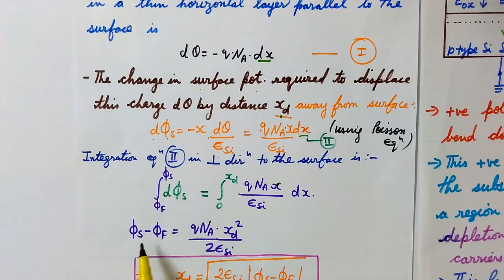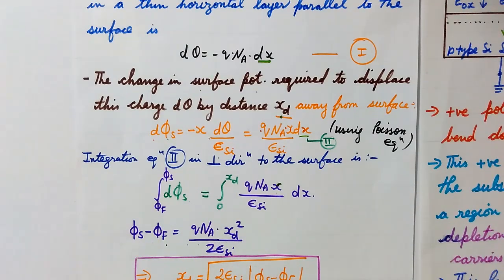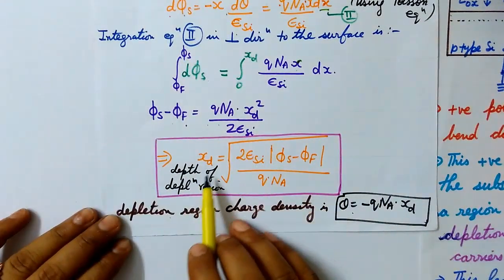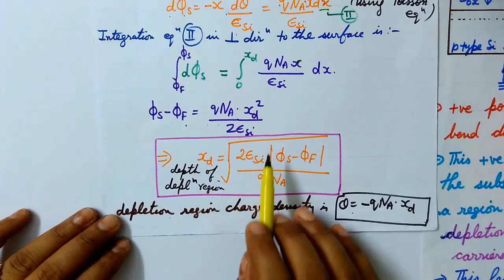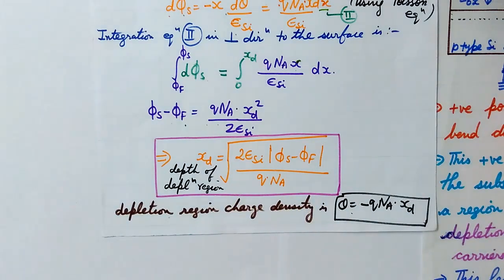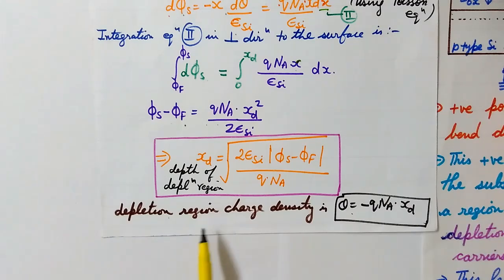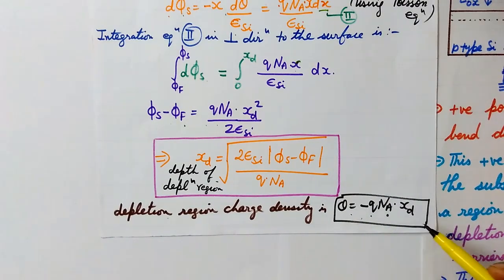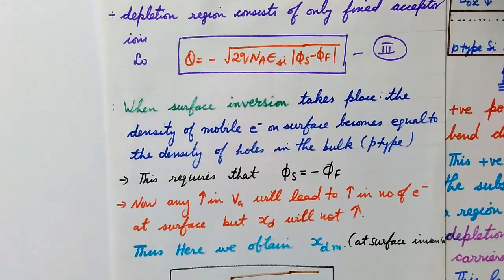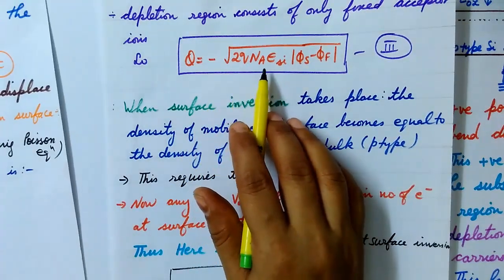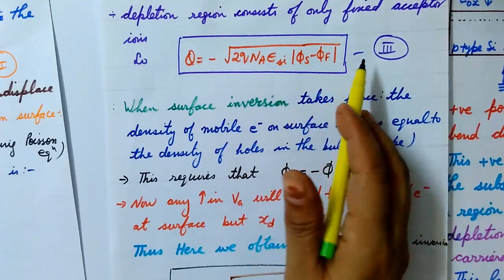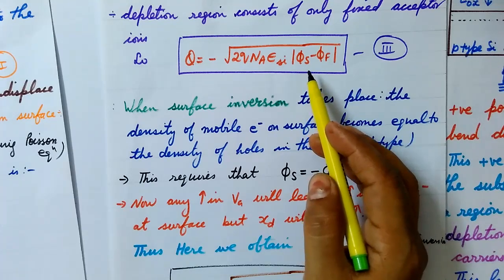After performing this integration, we get: φs minus φf equals q·NA·xd² upon 2εsi. From this we can calculate the depth of the depletion region: xd equals the square root of εsi times |φs minus φf| divided by q·NA. Since the holes have moved away leaving negatively charged acceptor ions, the total charge in the depletion region is Q equals minus q·NA·xd. Substituting xd, we get Q equals minus the square root of 2·q·NA·εsi·|φs minus φf|. This is equation number three.